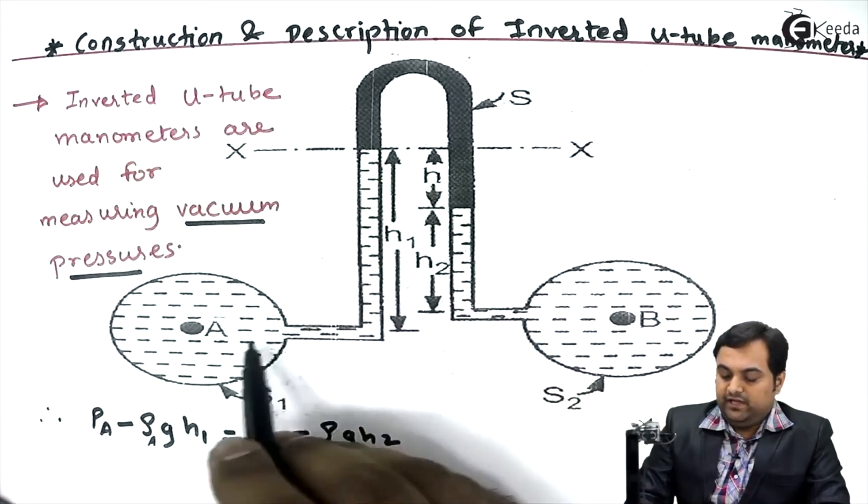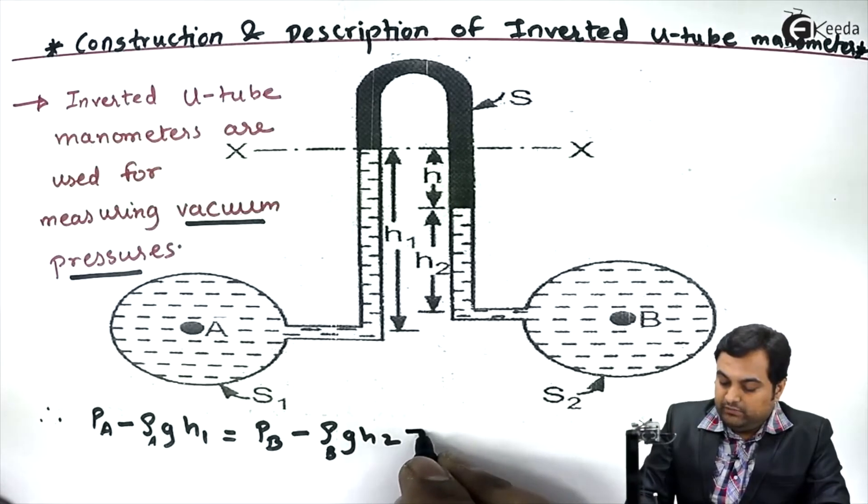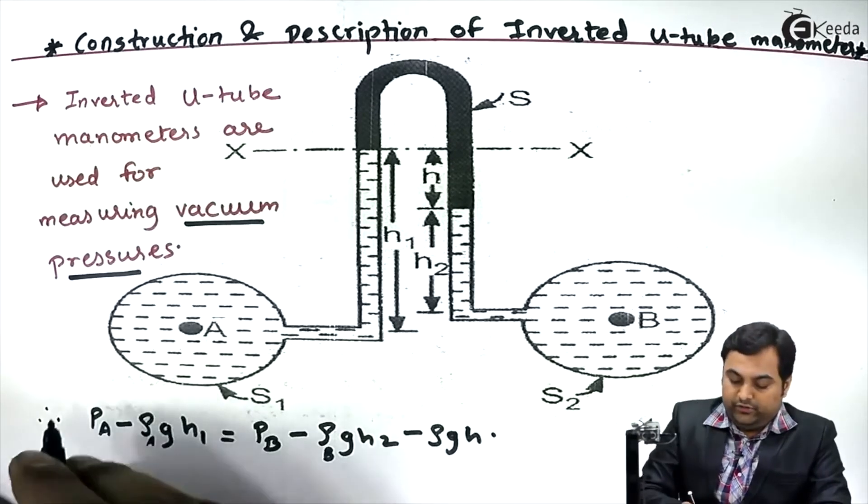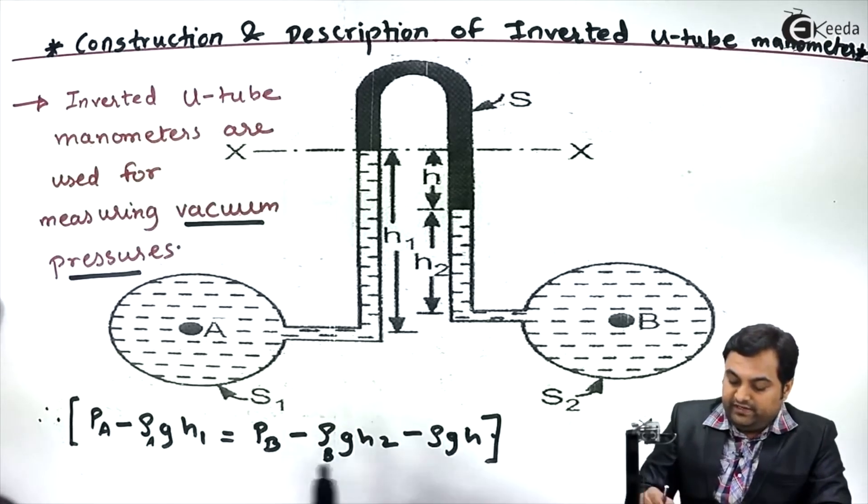The liquid with height H should be heavier than the liquid in the pipeline. It could be mercury or any liquid which is given. So I'll write minus ρ·g·H.